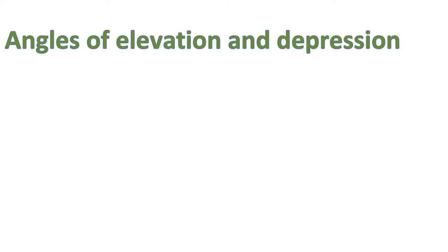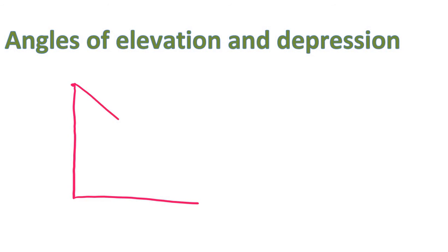Angles of elevation and depression. Let's say for example you're on top of a building. You look down to an object — so from horizontal to this side, looking down — and that is called the angle of depression.